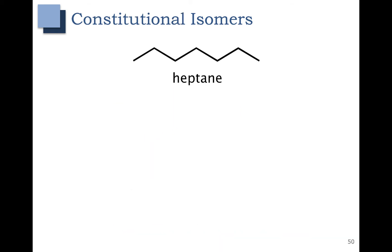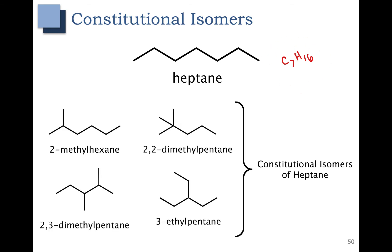Let's start with a simple example of a constitutional isomer. Here's heptane. Heptane has a molecular formula of C7H16. Isomers of heptane would have this same molecular formula but different connectivity. Here are some examples. All of these examples have the same molecular formula, C7H16, but you can clearly see that they have different connectivity.